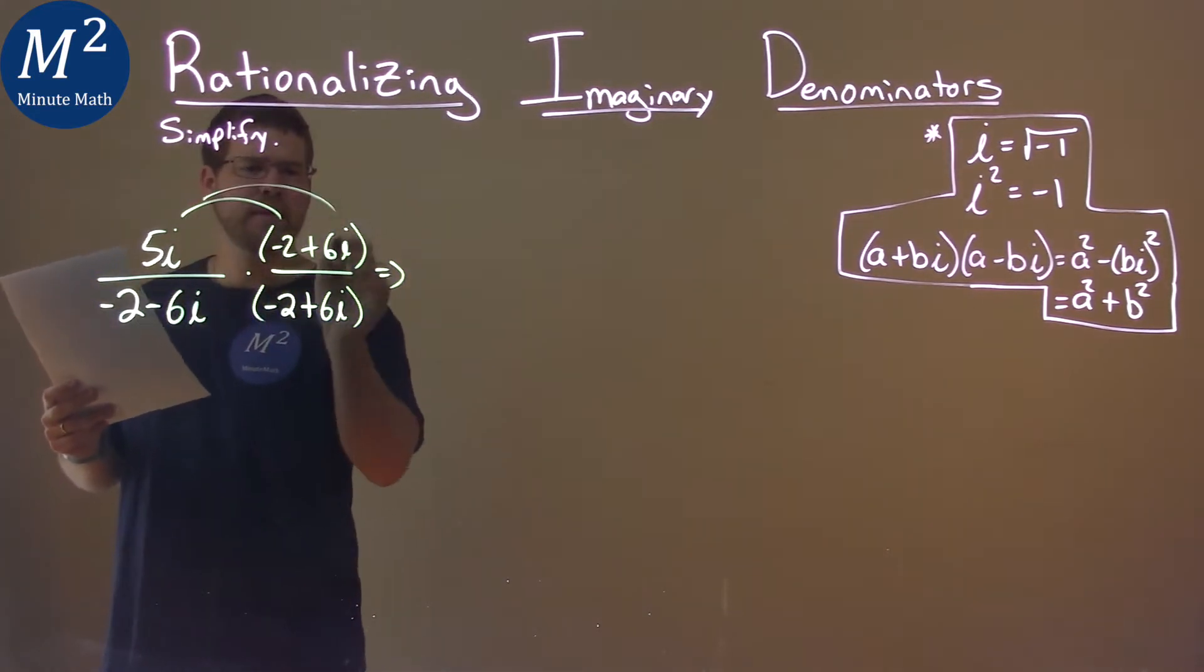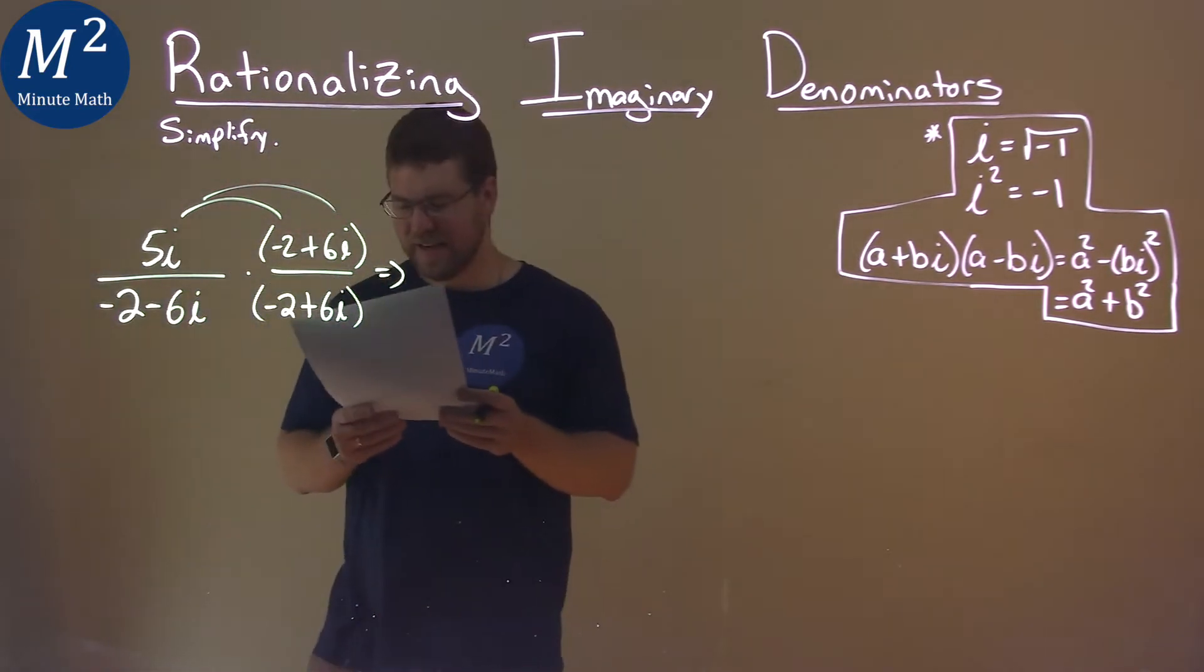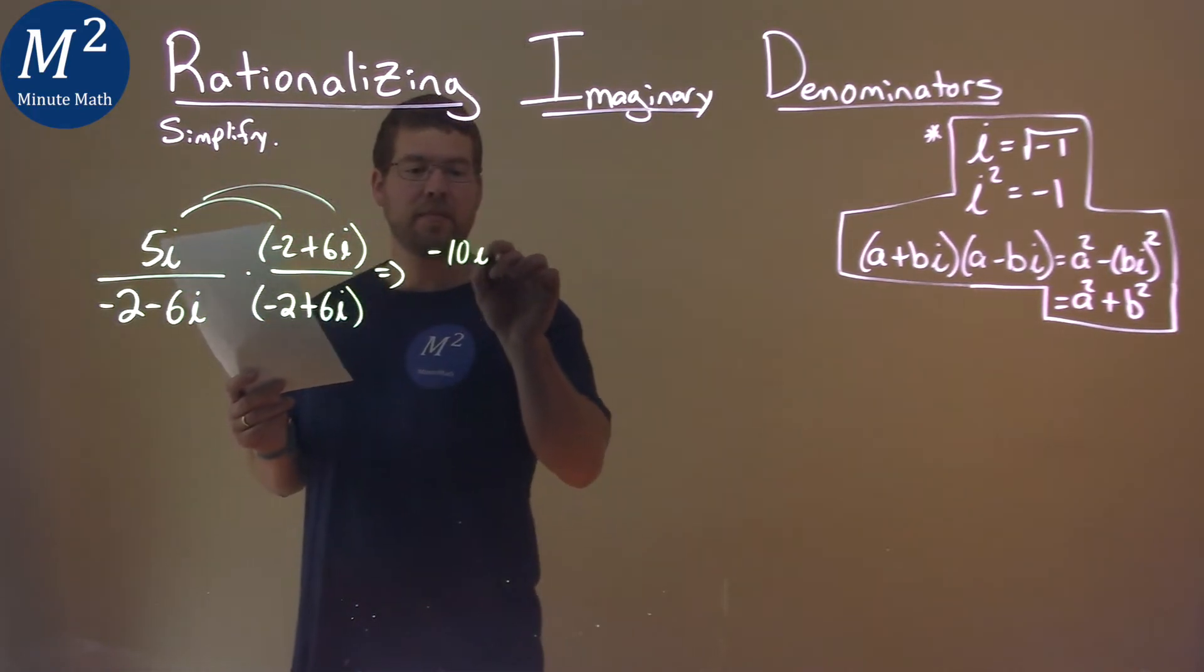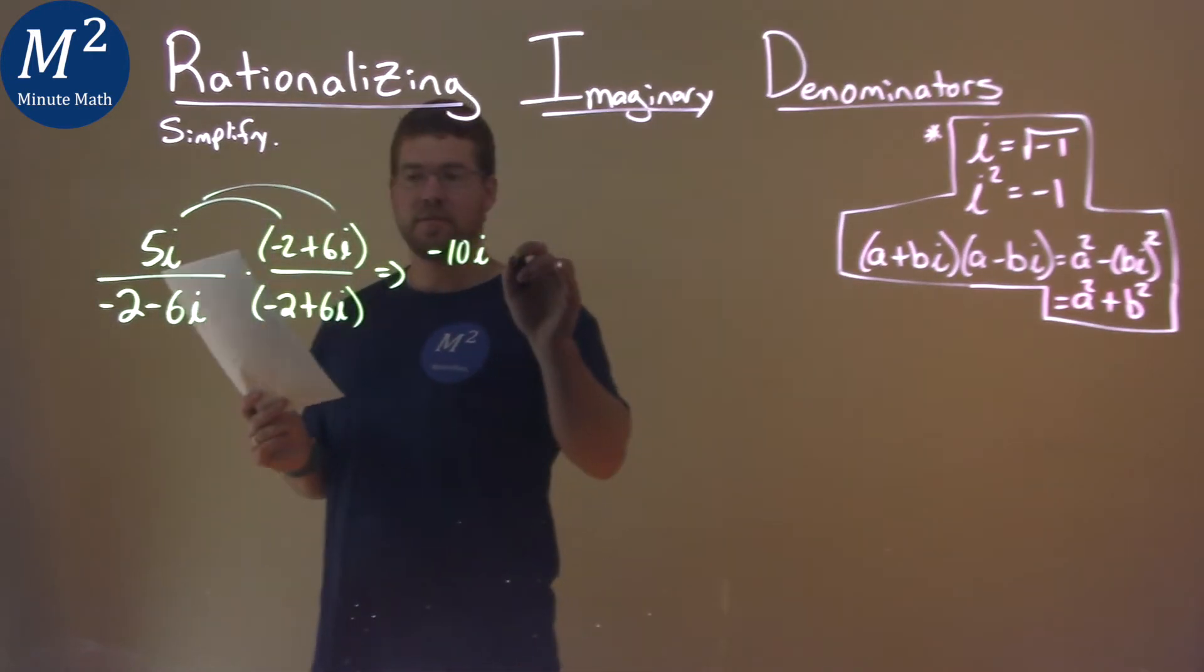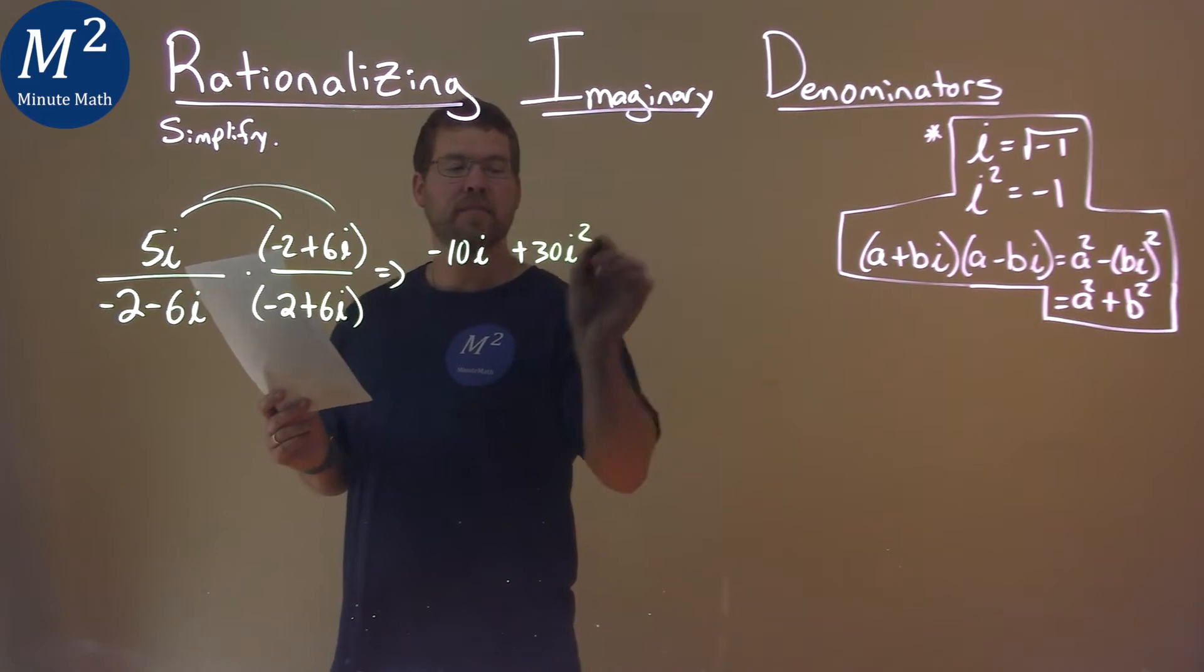Numerator, you have to distribute. So 5i times negative 2 is negative 10i. 5i times 6i is positive 30i squared.